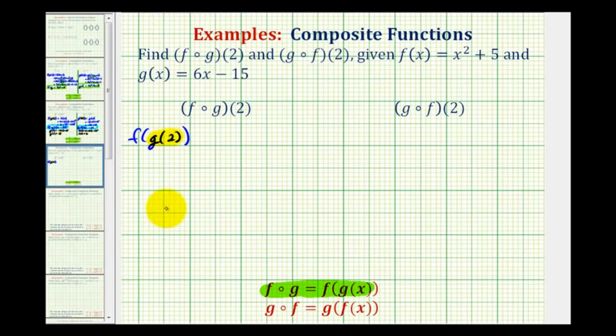Let's go ahead and do that below. Since g of x is equal to 6x minus 15, g of 2 is going to be equal to 6 times 2 minus 15. So g of 2 is going to be equal to 12 minus 15, or negative 3.